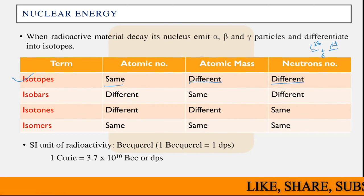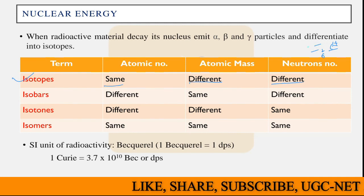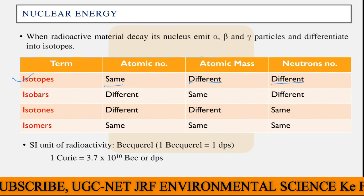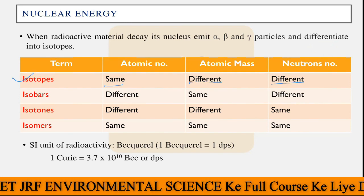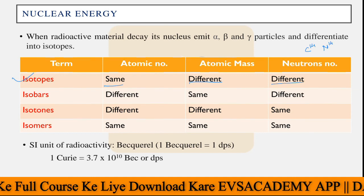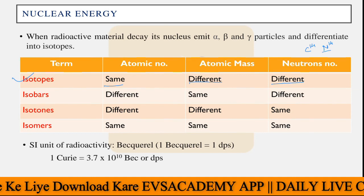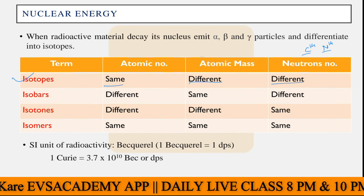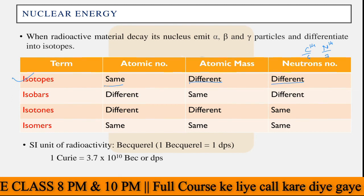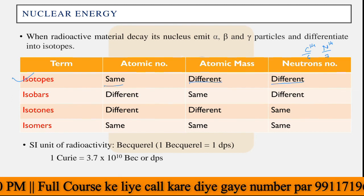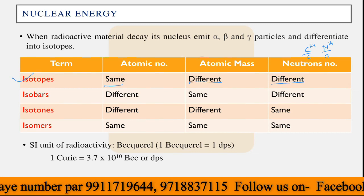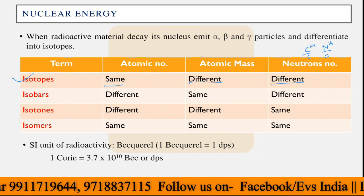Similarly, we have isobars. In isobars, the atomic number is different but the atomic mass is the same, and the neutron number is also different. For example, carbon-14 and nitrogen-14 — both masses are equal, but carbon has atomic number 6 and nitrogen has atomic number 7. The neutron numbers differ: nitrogen has 7 neutrons and carbon has 8 neutrons. So both are isobars of each other, sharing the same atomic mass.